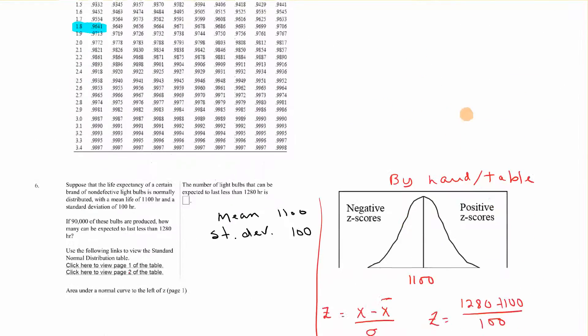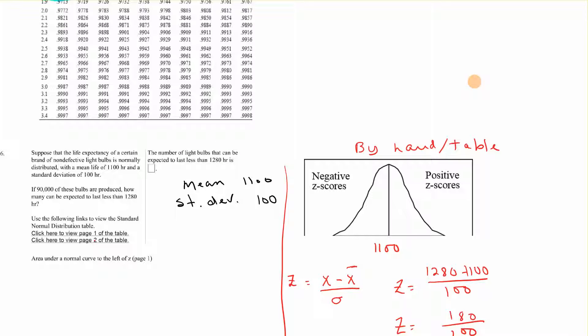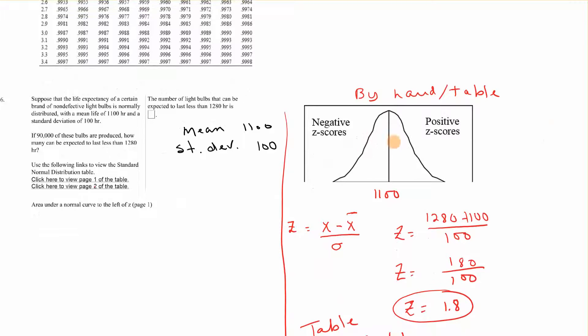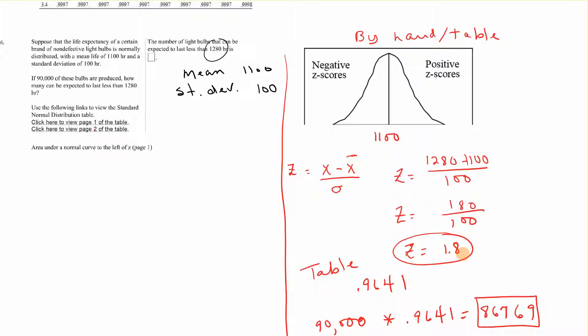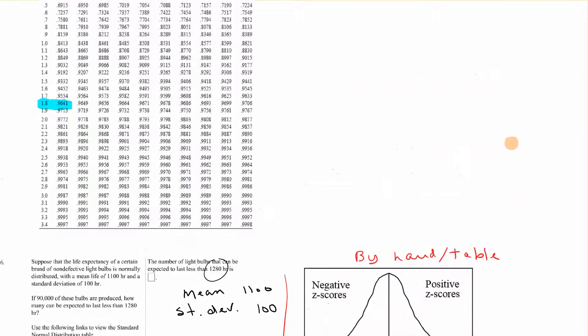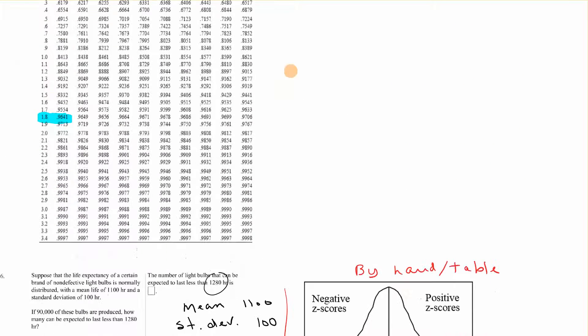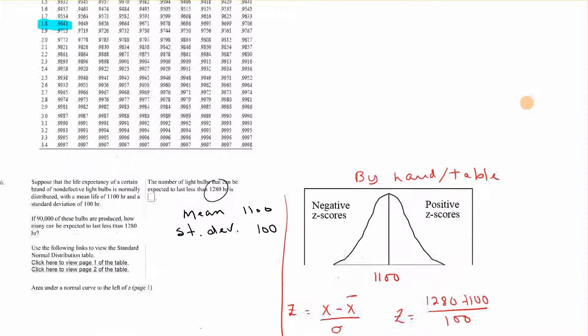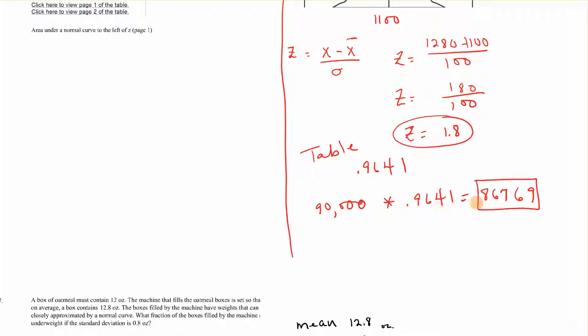Let's do number 6. We've still got the non-defective light bulbs with a mean life of 1,100 hours and a deviation of 100. We want to know the number of light bulbs expected to last less than 1,280. So if we do our z-score formula, 1,280 minus 1,100 over 100 gives us 1.8. We want to look for a z-score of 1.8, and that gives us an area of 0.9641. 90,000 times that gives us 86,769.